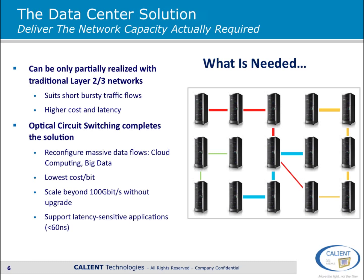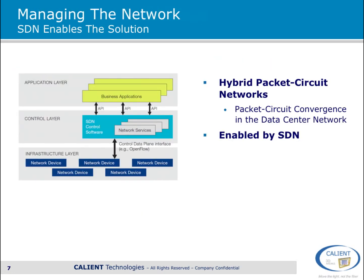What we end up with is a hybrid packet-circuit switch network — and this is where SDN comes to the rescue. What we show here is the well-known multi-layer SDN model with the application, control, and infrastructure layers. The important point is that the packet and optical circuit switches can all coexist together in the infrastructure layer with coordinated control from the upper layers.